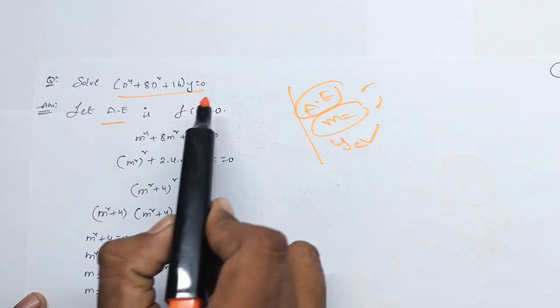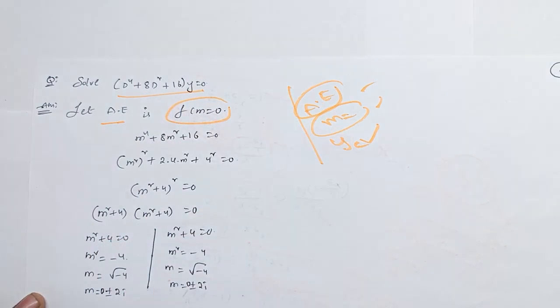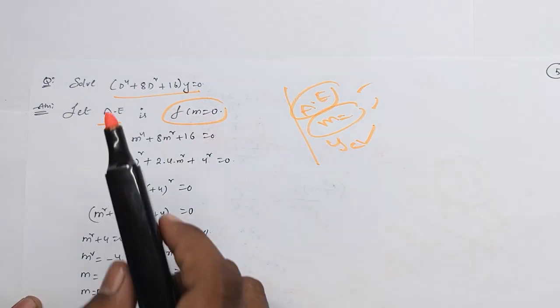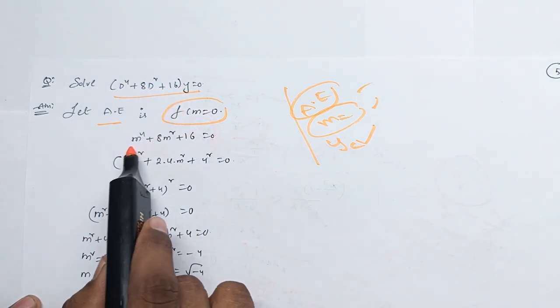So the auxiliary equation is f of M is equal to 0. That is the first method.